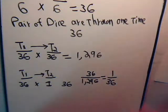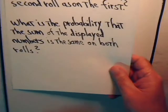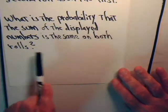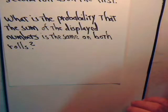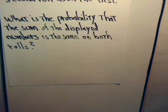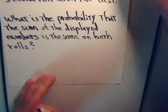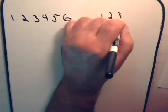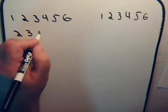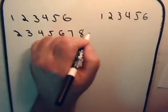For Question 3, we want the probability that the sum of the displayed numbers is the same on both rolls — the numbers might be different, but when you add them up you get the same sum. Let's see what different sums we can generate. When we add up the numbers from a roll of two dice, the possible sums we can get are 2, 3, 4, 5, 6, 7, and so forth up to 12.